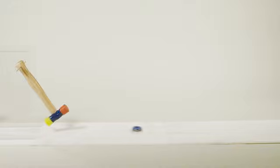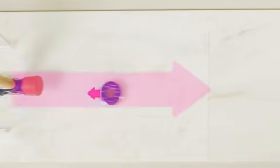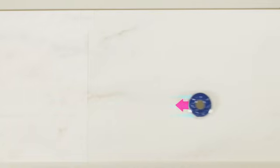First, let's see what happens when the puck travels over tile. The puck travels really far. That's because the smooth surface of the tile exerts a weak friction force on the puck. The weak friction force only causes a small velocity change, so the puck moves far across the tile.